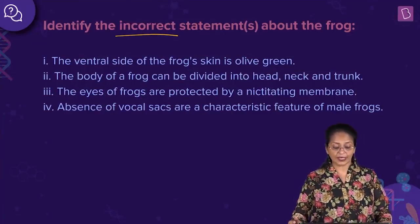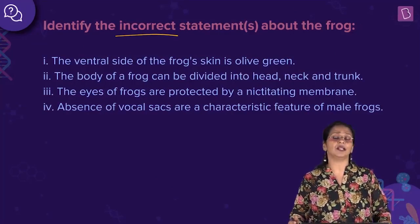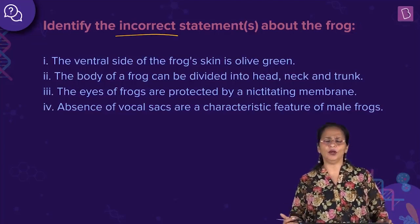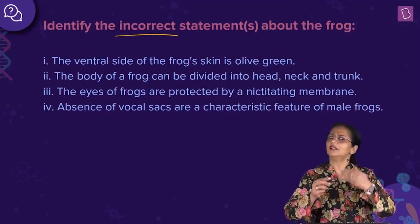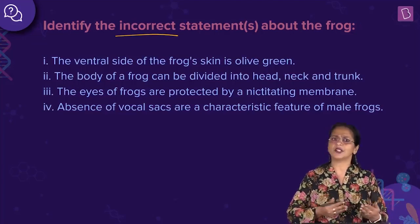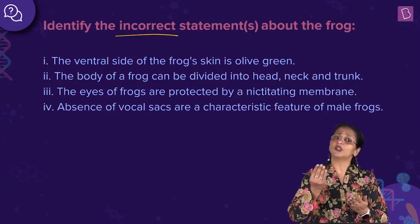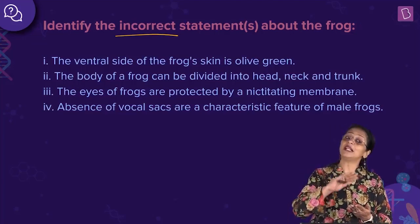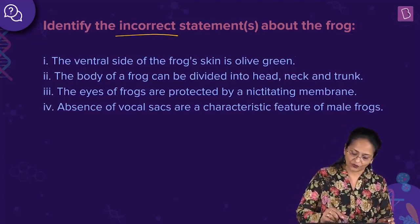The first statement: the ventral side of the frog's skin is olive green. If you look at the dorsal surface it is greenish in color, but the ventral surface is a pale yellow in color. So it is not olive green — this statement is incorrect.